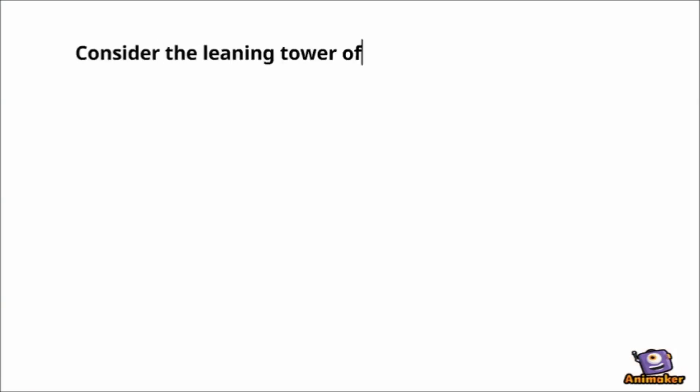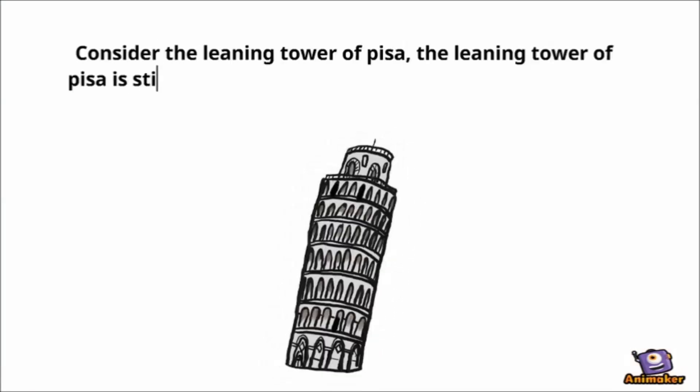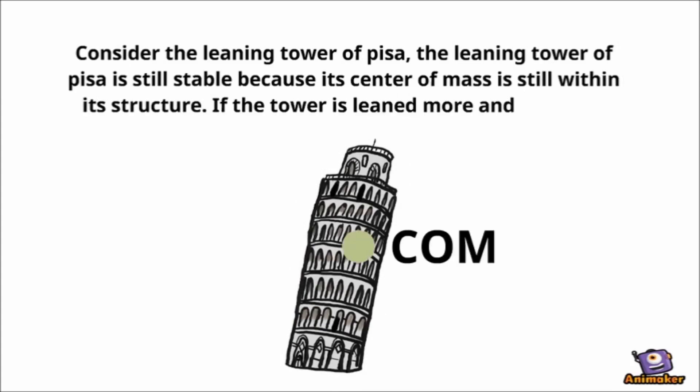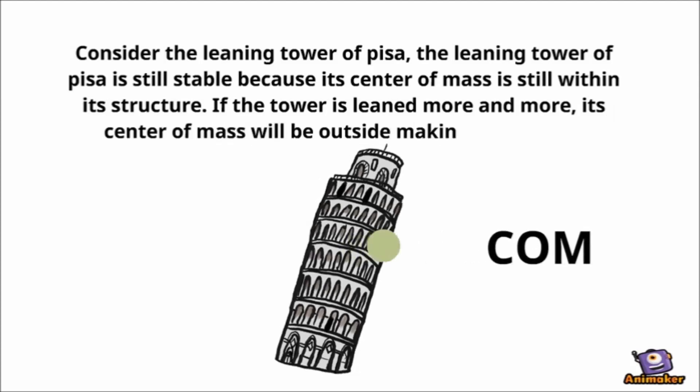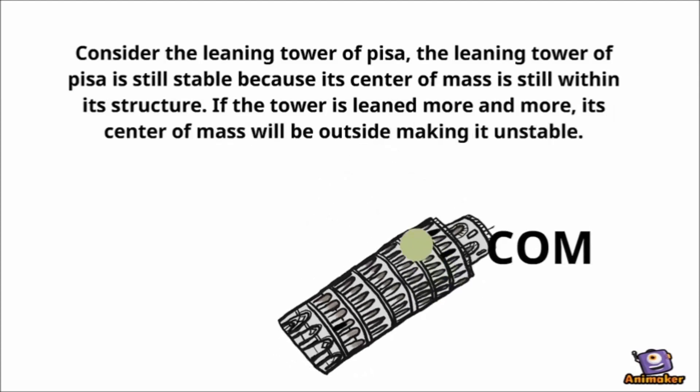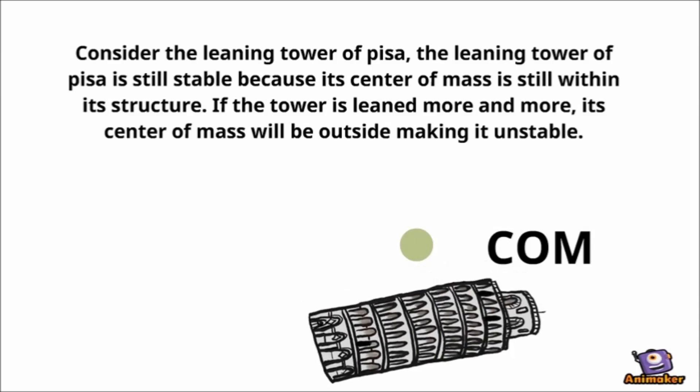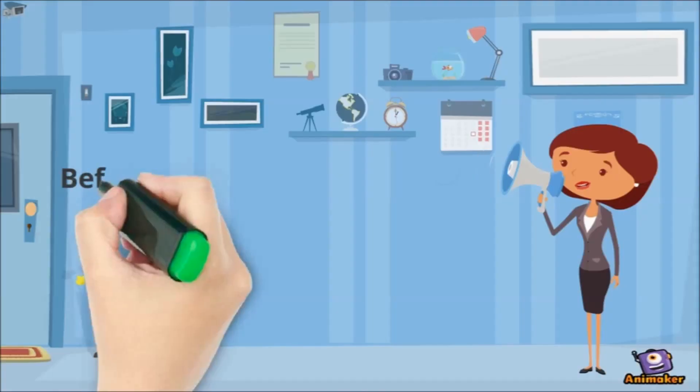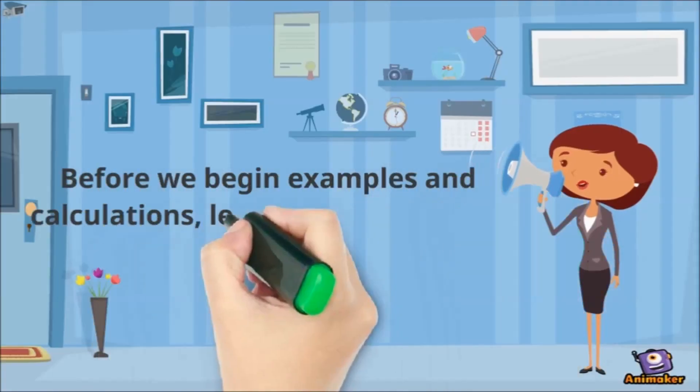Consider the leaning tower of Pisa. The leaning tower of Pisa is still stable because its center of mass is still within its structure. If the tower is leaned more and more, its center of mass will be outside making it unstable. Before we begin examples and calculations, let us summarize first the conditions for equilibrium.